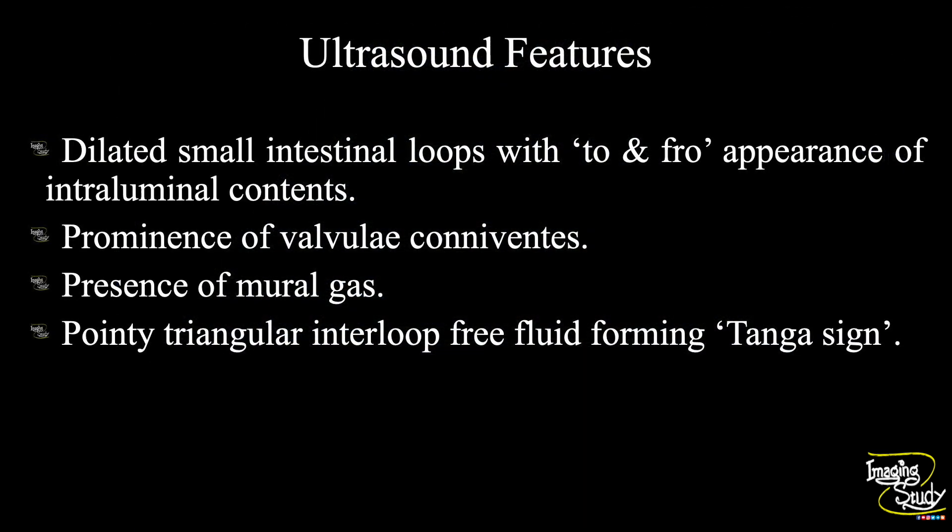In summary, dilated small intestinal loops with to-and-fro appearance of intraluminal contents are seen. Valvulae conniventes were seen, indicating it as a small intestinal obstruction. There was intraluminal mural gas. This feature confirms small intestinal obstruction. We consider small intestinal loops to be distended when the diameter is more than 3 cm.